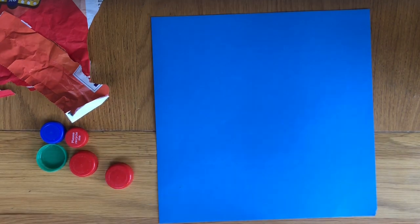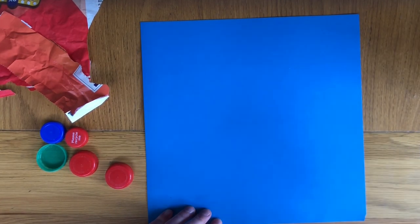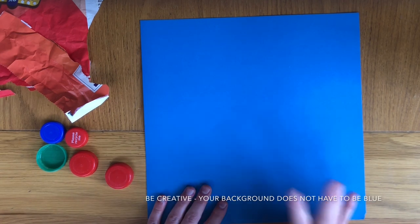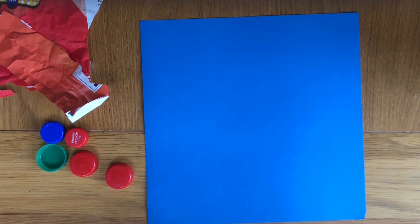We're going to start with a blue background which will represent the ocean. But if you don't have blue paper, you can use white paper or even paint some paper blue. Have a look around your house to see what you've got.